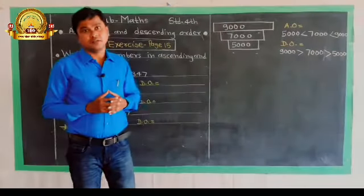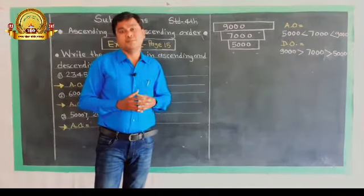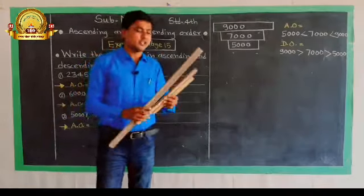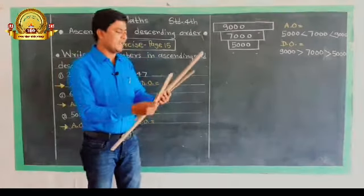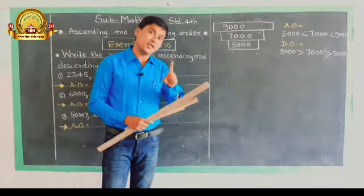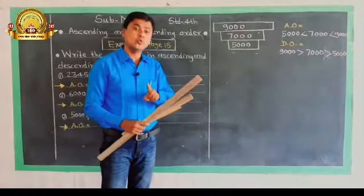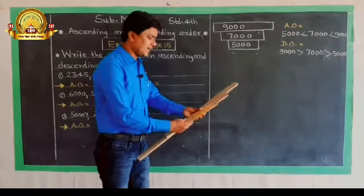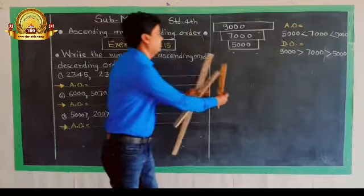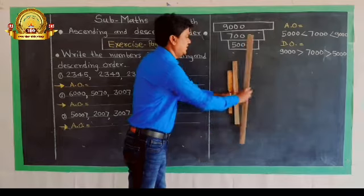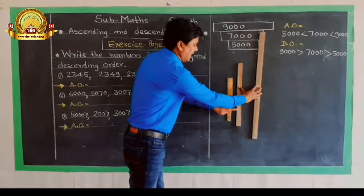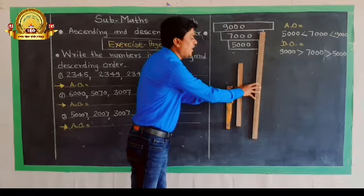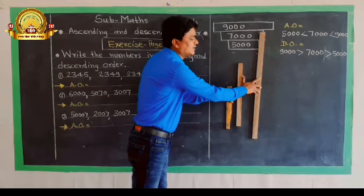Before we start, I am going to do a small practical for these concepts. I have three wooden rulers. In ascending order, the smallest ruler comes first, then the bigger one, then the biggest one. So in ascending order: smaller, then bigger, then biggest — the smallest ruler is here and the biggest one is at the end.